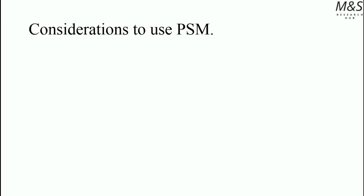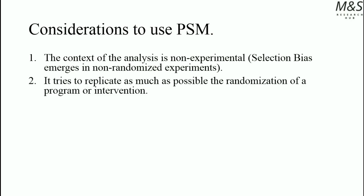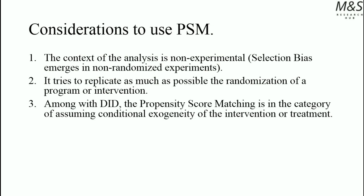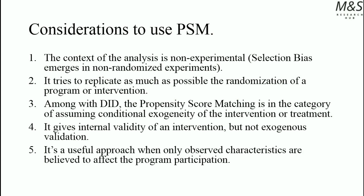Considerations for using propensity score matching: the context of the analysis is non-experimental, so selection bias emerges in non-randomized experiments. It tries to replicate as much as possible the randomization of a program or intervention. Along with difference-in-differences, propensity score matching falls in the category of assuming conditional exogeneity of the intervention or treatment. It gives internal validation of an intervention, but not external validation. It is useful when only observed characteristics are believed to affect program participation.